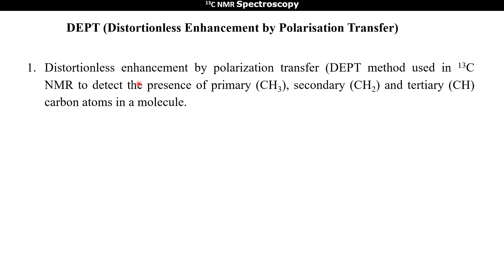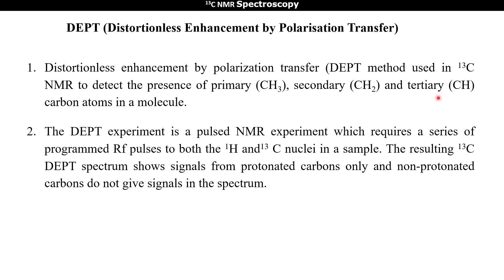The Distortionless Enhancement by Polarization Transfer method is used to detect the presence of primary (CH3), secondary (CH2), and tertiary (CH) carbon atoms in a molecule — that is, to distinguish between primary, secondary, and tertiary carbon atoms. This DEPT experiment is a pulsed NMR experiment which requires a series of programmed radio frequency pulses to both proton and 13C nuclei in a sample. The resulting 13C DEPT spectrum shows signals from all protonated carbons only; non-protonated carbons do not give signals in DEPT.